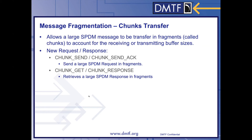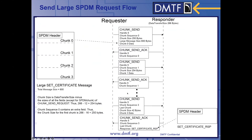Chunk send and chunk send ACK send a large SBDM request in fragments. Here is an example of sending a large request using a large set certificate message. On the left is a generic illustration of the request divided into chunks, chunk 0 through chunk 3. To send this large set certificate message to the responder, the requester uses chunk send to send the first chunk, chunk 0, to the responder. The responder replies with chunk send ACK. The requester then sends the next chunk using chunk send, sending chunk sequence 1.